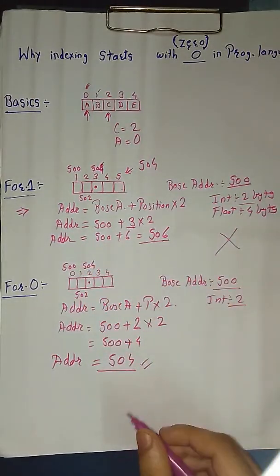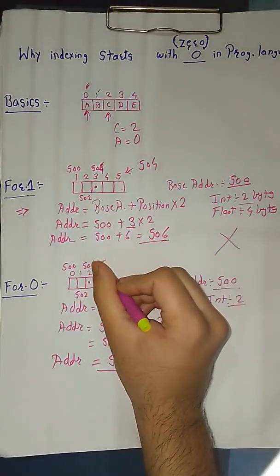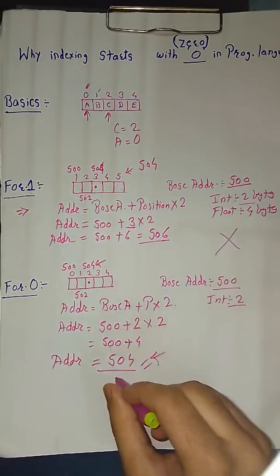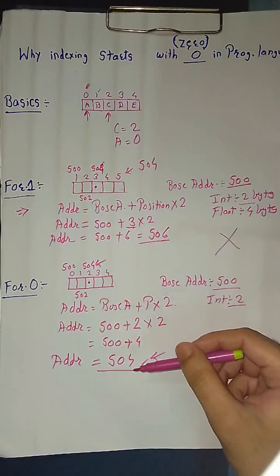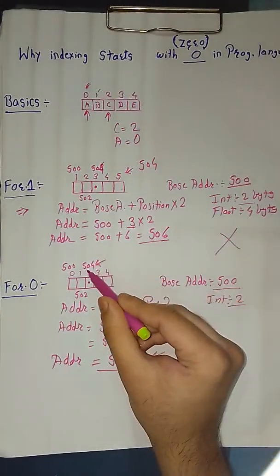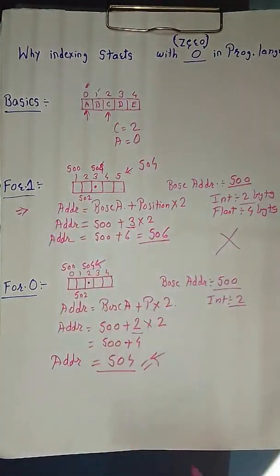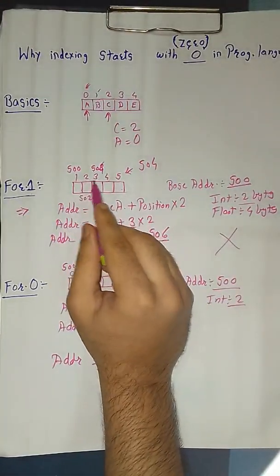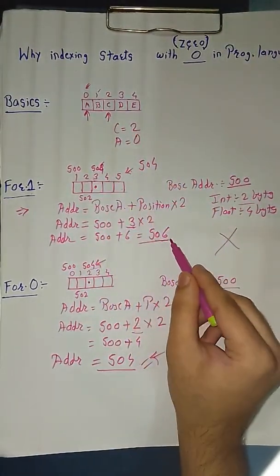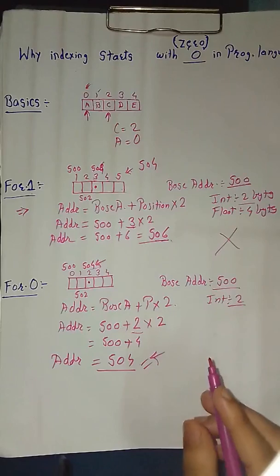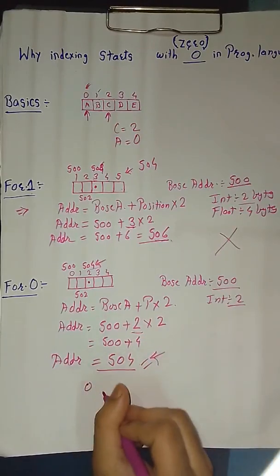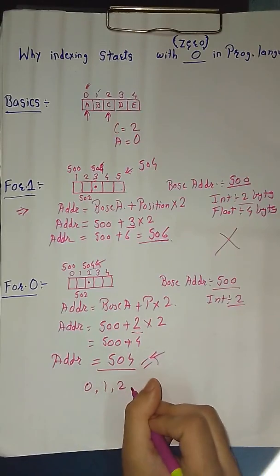As you can all see here, here is 504 and here it is also 504. So the array element and the address, which means theoretical and the calculation method, is same. We have got 504 for second position; here we also got 504. But when we take indexing as 1, 2, 3, 4, 5, we got 504 at this element and 506 in calculation. That's the main reason why any index should start with 0, 1, 2, 3.